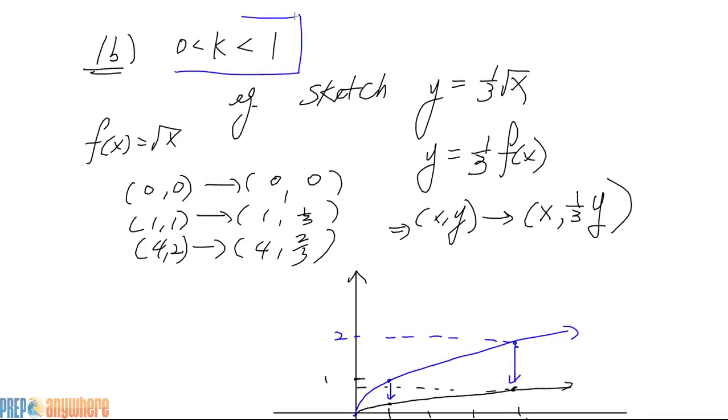When k is between 0 and 1, we call this vertical compression. And we say it's been vertically compressed by a factor. In this case, 1 third. The picture and the description make sense, right?